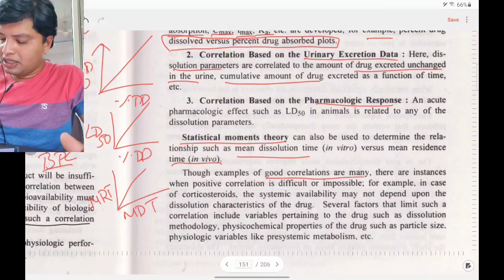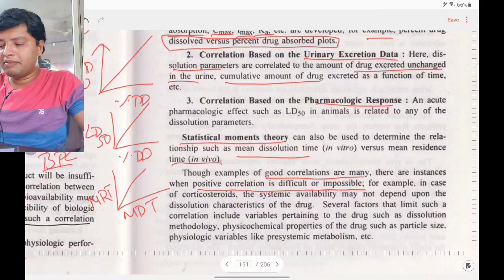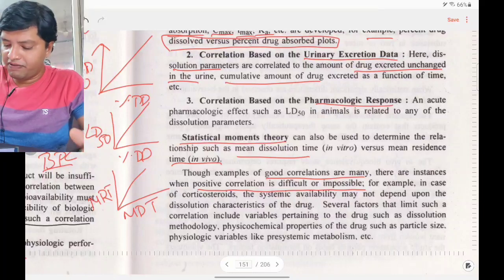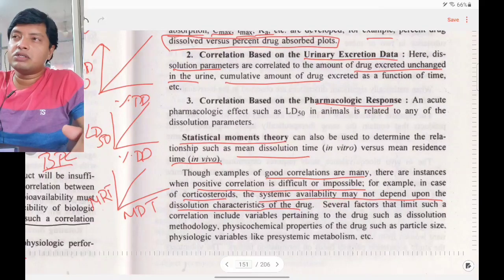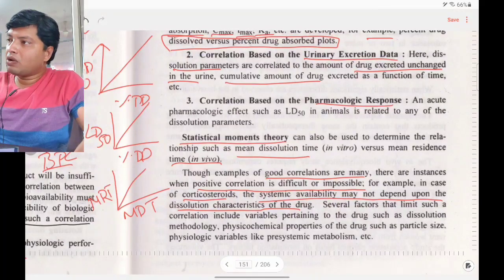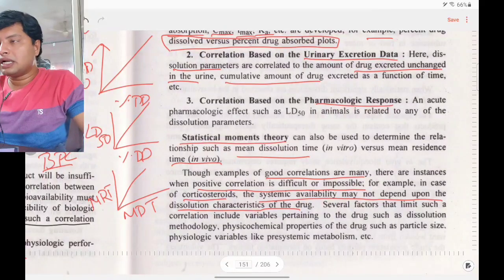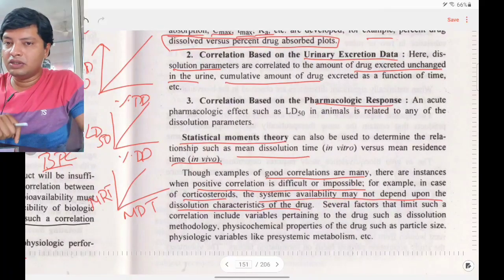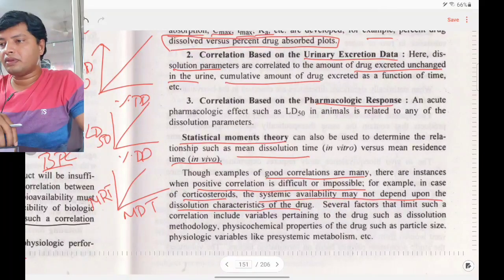Though examples of good correlations are many, there are instances when positive correlation is difficult or impossible. For example, in the case of corticosteroids, systemic availability may not depend on dissolution characteristics of the drug. If the drug undergoes active absorption, it does not depend on dissolution rate, and there will be rate-limiting by the active absorption mechanism.